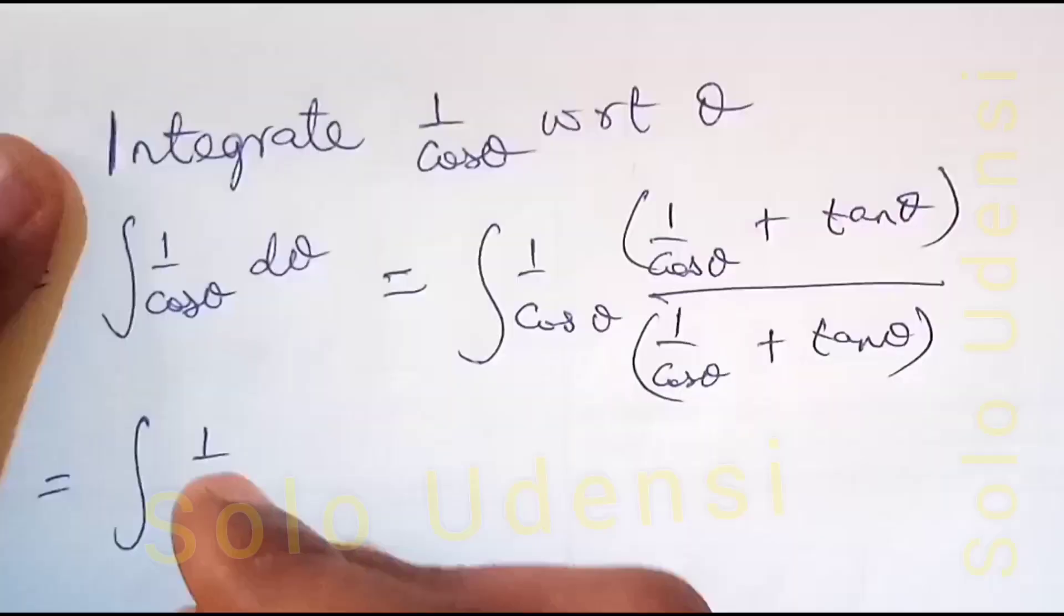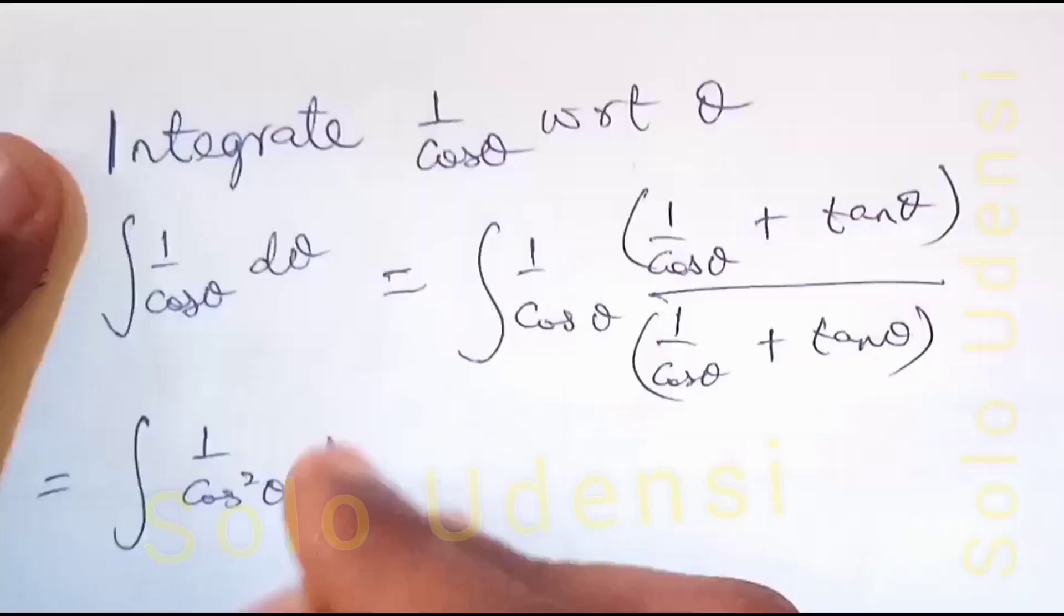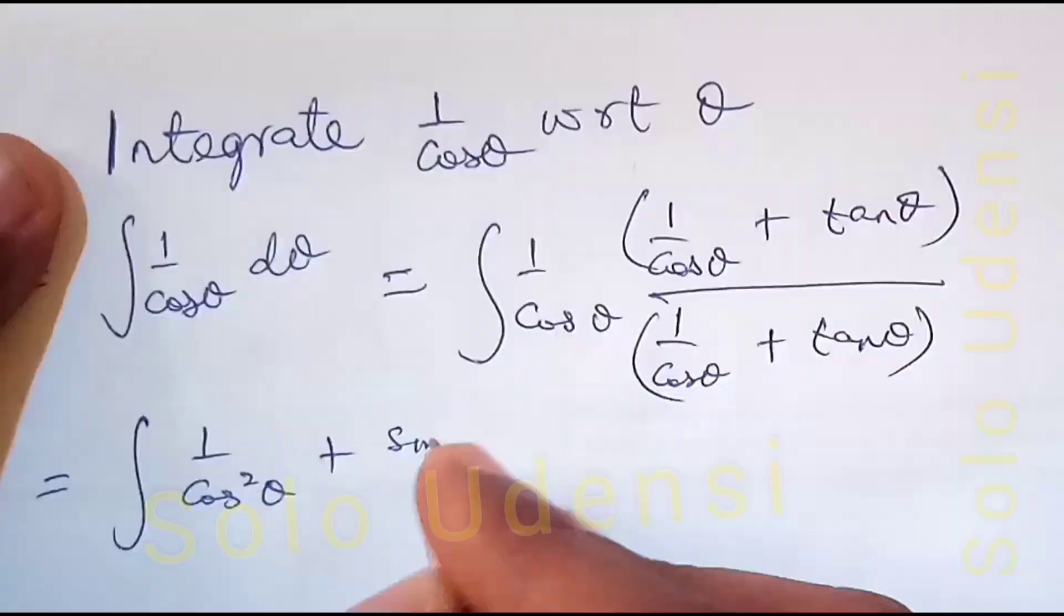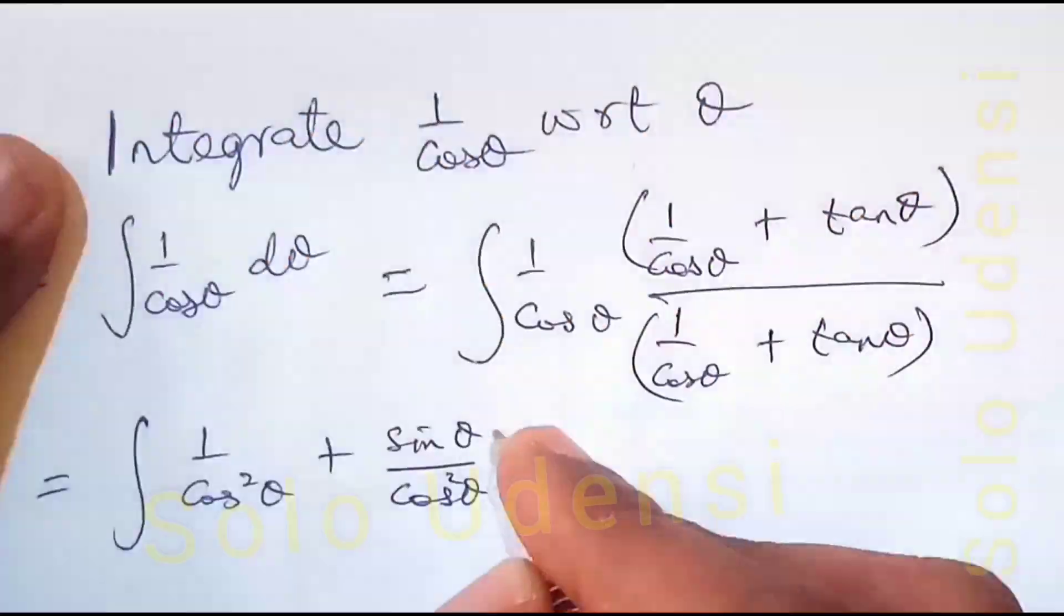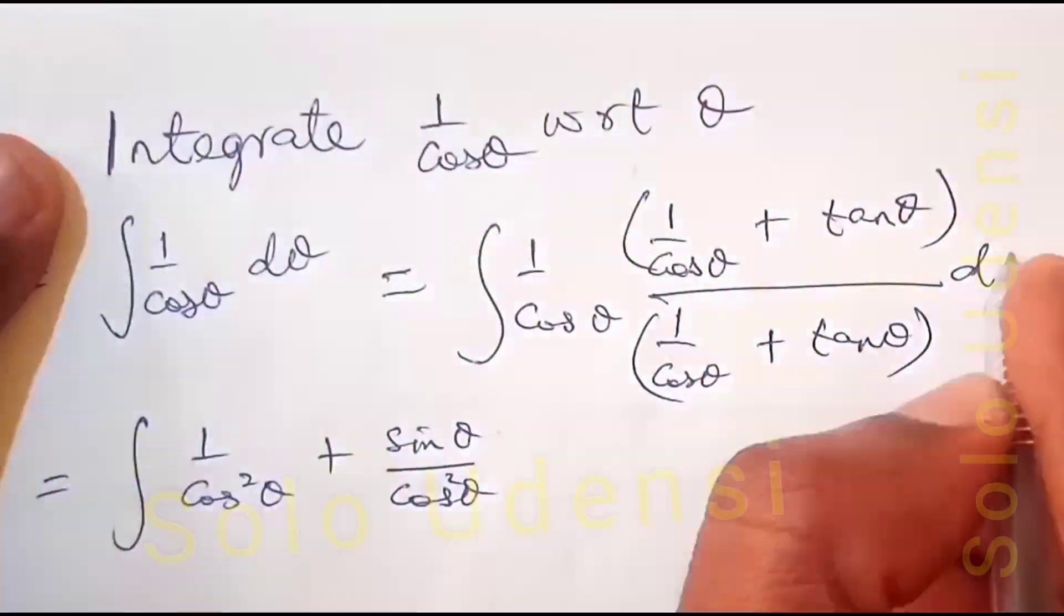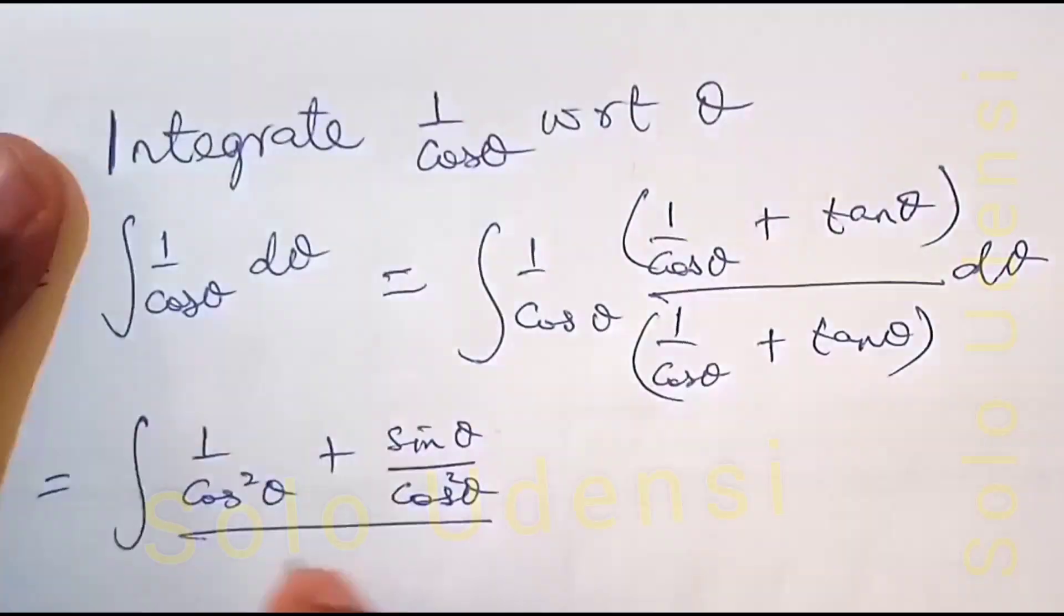This gives us 1 over cos squared theta plus sin theta over cos squared theta, all over 1 over cos theta plus tan theta.